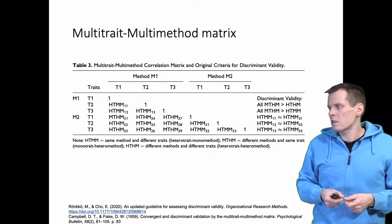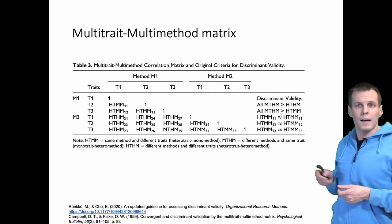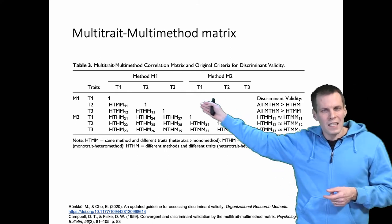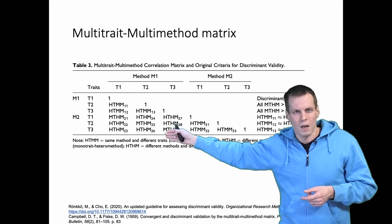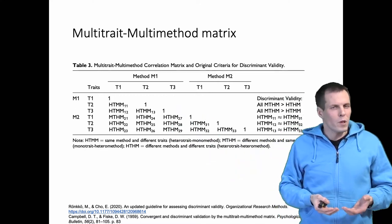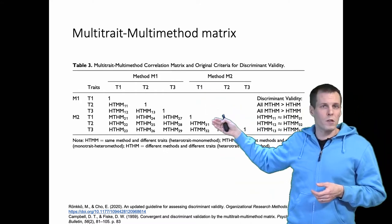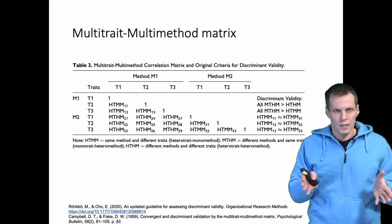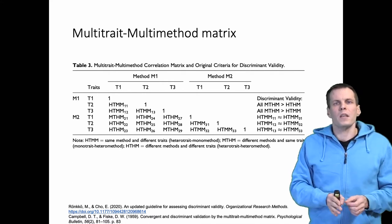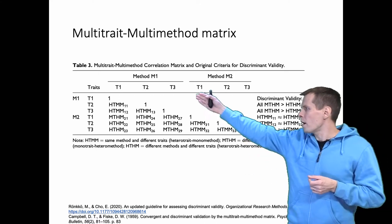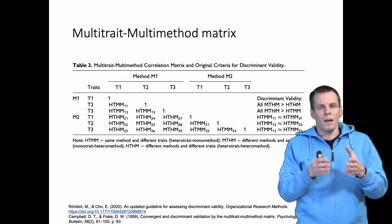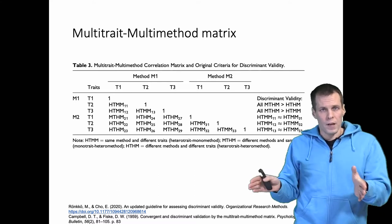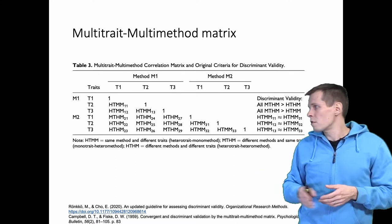Looking at the original definition: the rules of thumb for discriminant validity require understanding what the t's and m's are in the multi-trait multi-method matrix. The t's are the traits being measured — for example, performance, innovativeness, and entrepreneurial orientation. Each trait is measured with at least two different methods, m1 and m2. If two methods measure the same trait, the scores should be highly correlated; if they measure different traits, the correlation should not be as high.